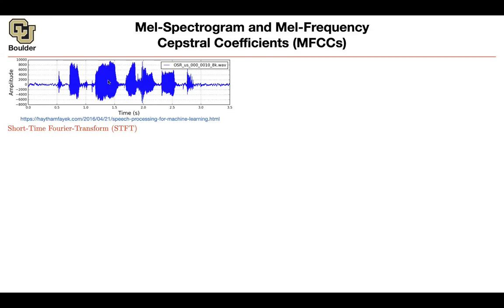Basically, you're expanding your signal in terms of sines and cosines. You're going to get some complex values, but then you're going to take the absolute value of your complex Fourier coefficients, and that's going to give you some magnitude. So it didn't help us — we want to keep both the time and the frequency. How are we going to do it? You're going to use short-time Fourier transform, STFT.